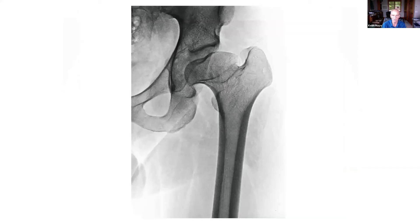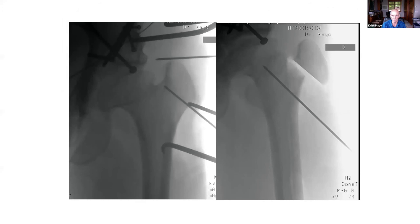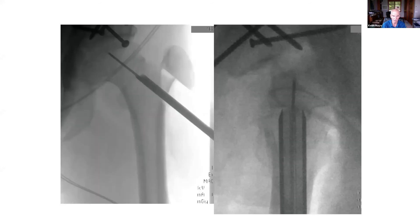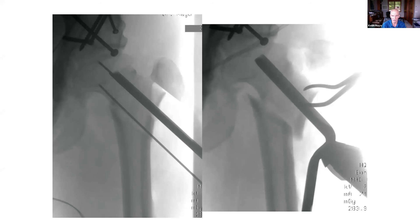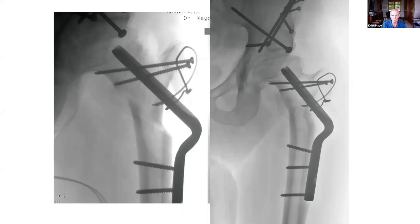A more extreme example is a more severe coxa breva associated with Perthes disease. We performed a trochanteric osteotomy, surgical dislocation, seating chisel insertion, and then a long oblique osteotomy. In this situation, we're gaining leg length as well as offset, which effectively gives the patient a much longer femoral neck.